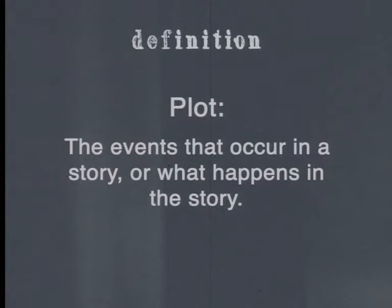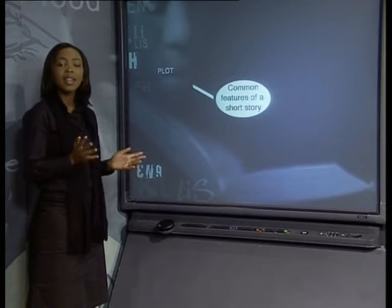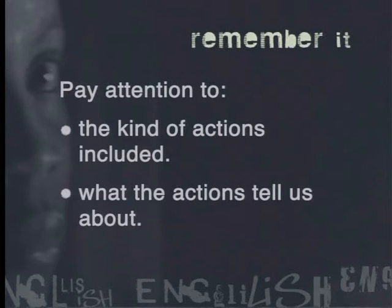Instead of trying to define what a short story is, we're going to have a look at the common features of the short story. The first feature that all short stories have is a plot. Plot refers to the events that occur in a story, or what happens in the story. Under plot on our mind map, we add in events in the story. A good writer of short stories will have a plot where the events are arranged for maximum drama. Because a short story is short, the author must choose a limited number of actions or events that show us something about the main character. There is no space for unimportant actions, so everything counts.